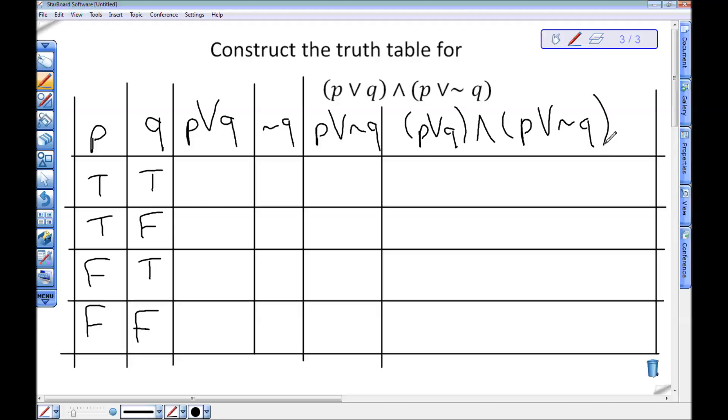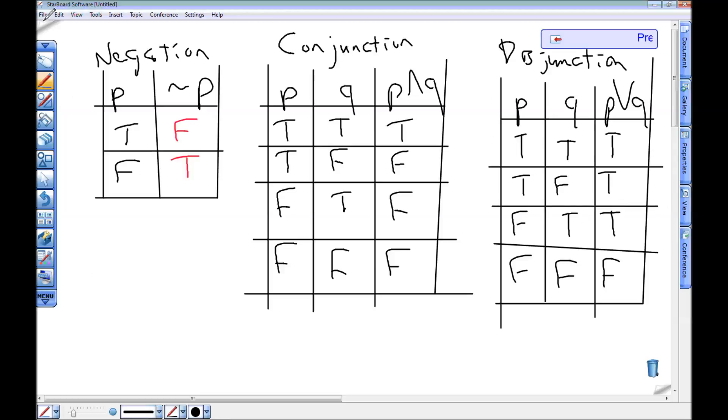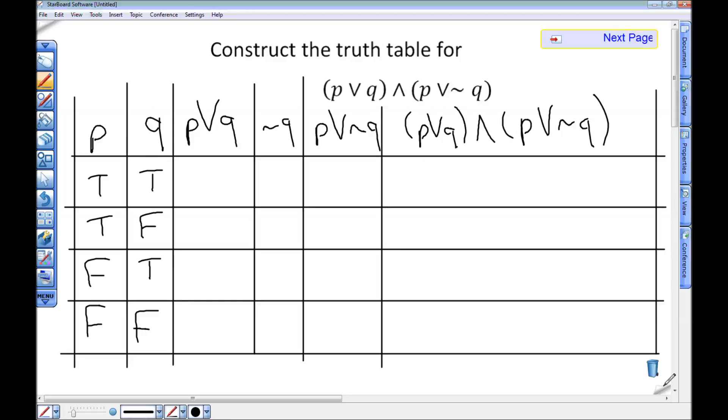In order to do some of this, I'm going to refer back to my truth tables that I have on this previous page here. So I've got the truth table there for negation, conjunction, and disjunction all set for me to reference. So, let's begin here.